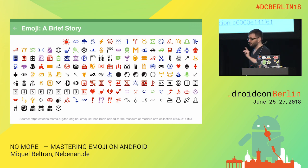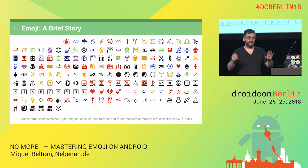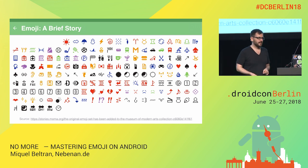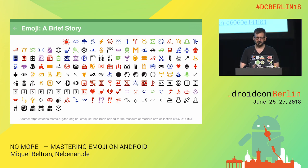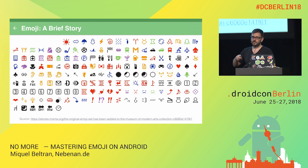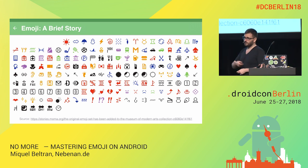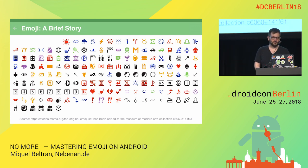It was not until 2010 when a company starting with an 'A' from the United States went to the Japanese market and said: no, we cannot do this, we need a standard. That's when Unicode got together with them to incorporate emoji into the Unicode standard. And now we have more than 4,000 emoji, and all the original emoji have carried on into this new spec.